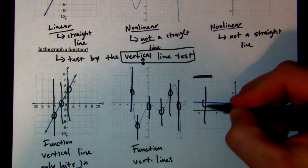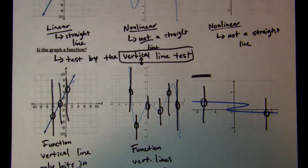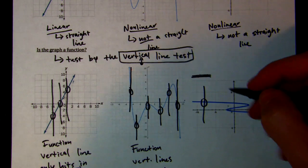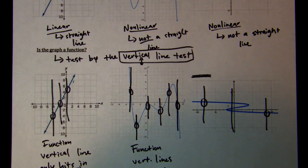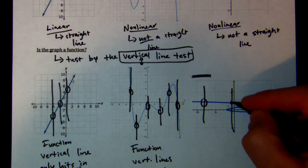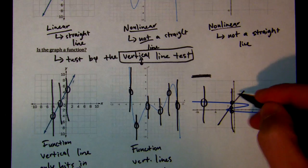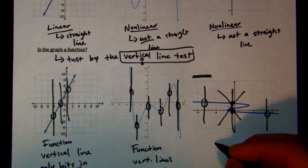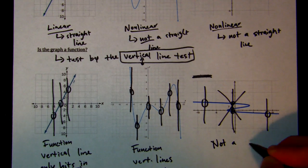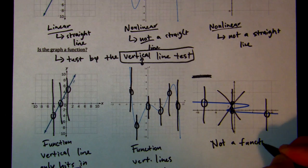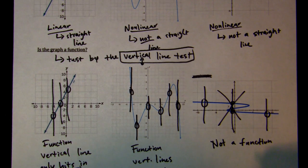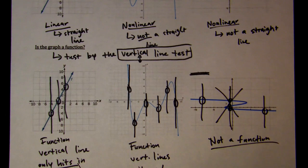Now let's take a look at this one. It passes here because it only hits once, and it passes there because it only hits once. But what if I draw a vertical line right here? How many times does it hit? Well, it hits once, it hits twice — it hits three times. So we know that this is not a function because it doesn't pass the vertical line test.